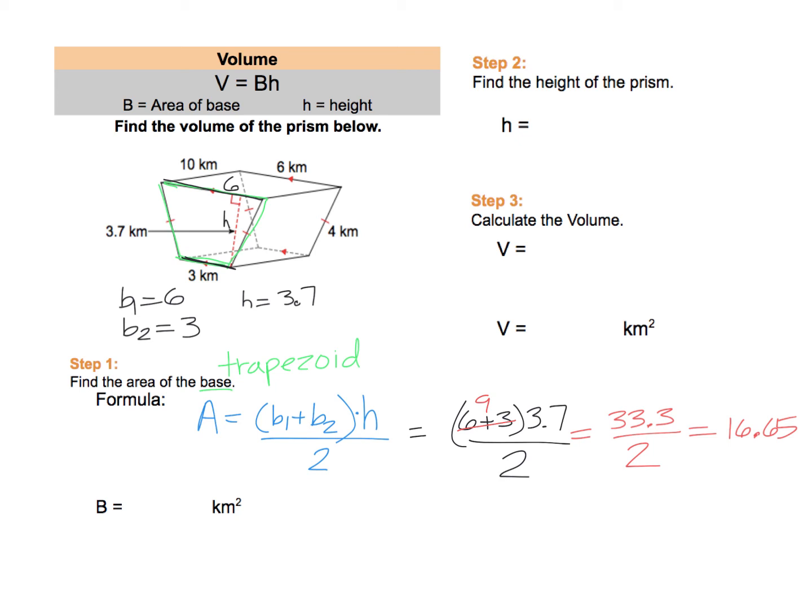Capital B is not our answer. Our answer is going to be the volume. If we round too soon, we're going to lose accuracy. So leave everything exact until the very, very end. There we just found capital B, 16.65 kilometers squared.